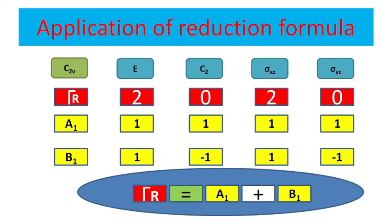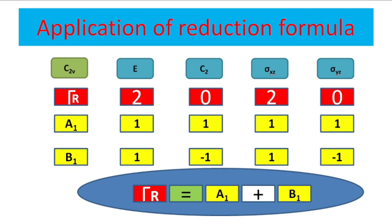To make this clearer, let us consider a C3v example. Using the bond vector method for the ammonia molecule, there are three bonds. Under the identity operation, all three bonds are undisturbed; under C3, all are disturbed; under a vertical reflection plane, the bond through which the plane passes is undisturbed while the remaining two are disturbed. So the reducible representation is 3, 0, 1.